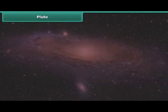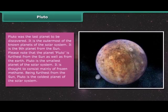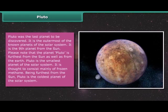Pluto was the last planet to be discovered. It is the outermost of the known planets of the solar system. It is the ninth planet from the Sun. Please note that the planet Pluto is the farthest from the Sun as well as from the Earth. Pluto is the smallest planet of the solar system. It is thought to consist mainly of frozen methane. Being farthest from the Sun, Pluto is the coldest planet of the solar system.